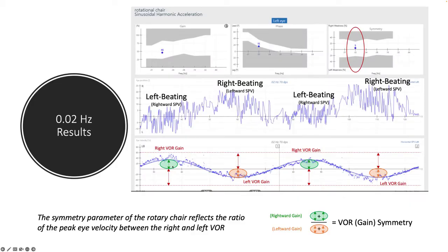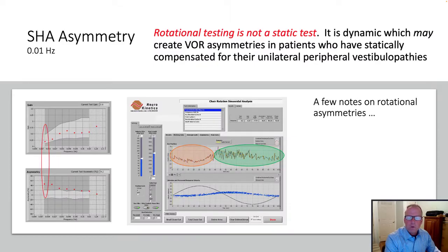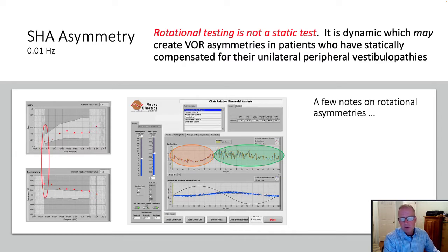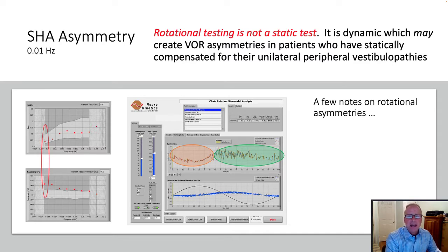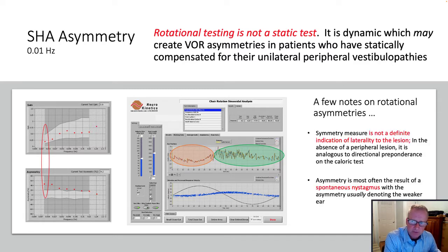We do that by adding up the right VORs and the left VORs and then comparing them to get a symmetry response. This is fairly straightforward. What you need to caution yourself with respect to symmetry is the fact that it is not necessarily reflective of the laterality of a lesion.